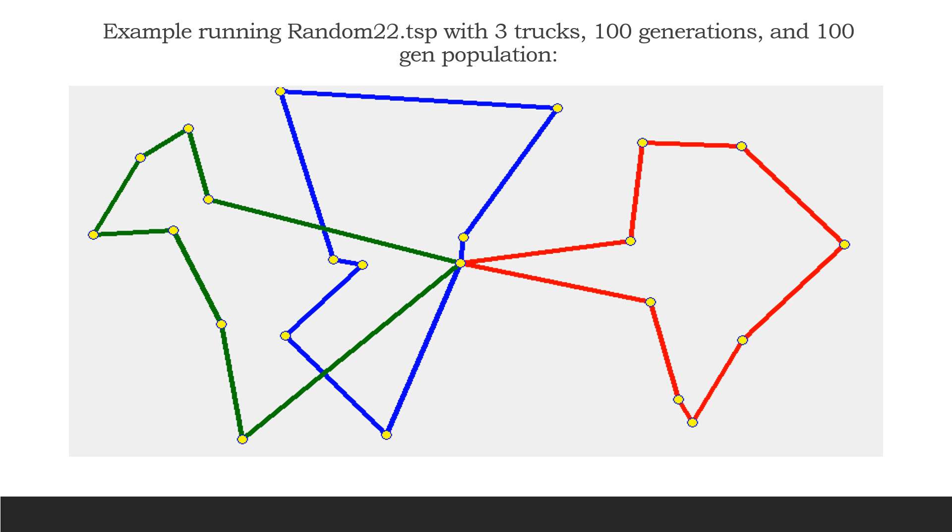Here is some actual data: an example of running Random 22.tsp with three trucks, 100 generations, 100 generation population, and all other variables held constant. This was using wisdom of crowds, seven tournament size, mutation rate of 0.4, wisdom percent of 0.3. You can see that each path actually achieves its optimal solution, and the XY coordinates grouping is very evident as you have the right side, the middle, and the left for where the paths are chosen to be.